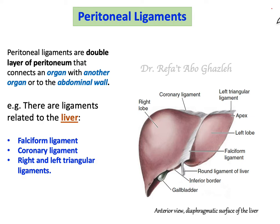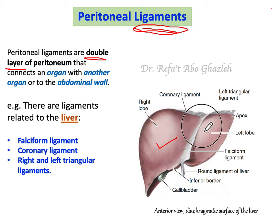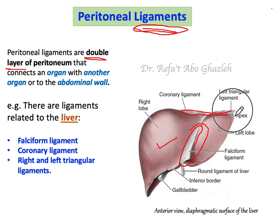We are talking about the peritoneum, and in this video I'm going to talk about the peritoneal ligaments. A peritoneal ligament is a double layer of peritoneum — essentially a thickened part of peritoneum. The function of ligaments is either to connect an organ, for example the liver, with another organ like the stomach or duodenum, or to connect an organ with the abdominal wall.